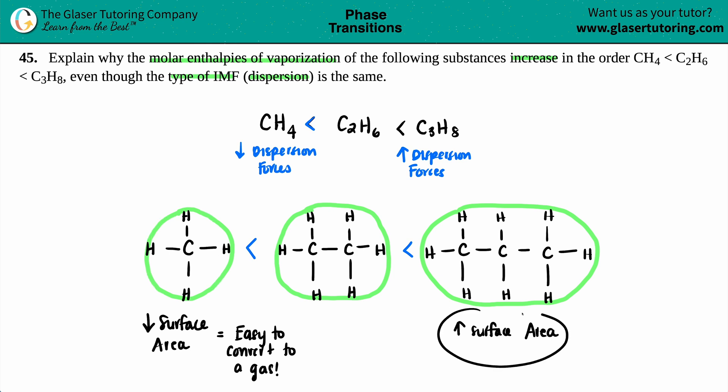But over here, if you have a high surface area, you have much more to cover, you need a lot more energy to convert to gas. So this would be harder to convert to a gas. And the easier that it is, this means that your molar enthalpy of vaporization would be the lowest.